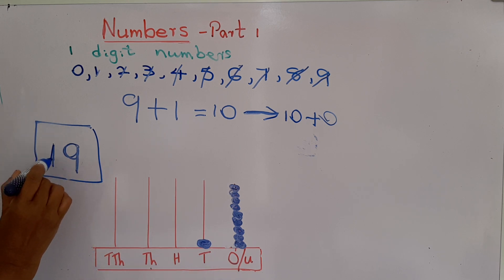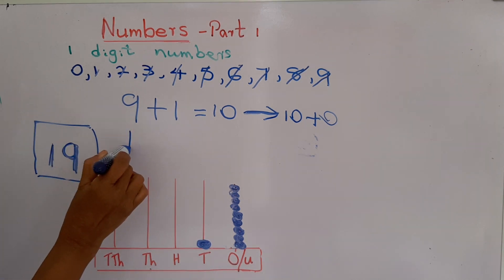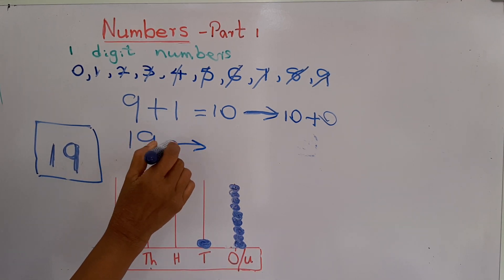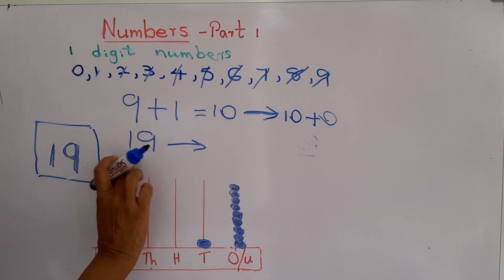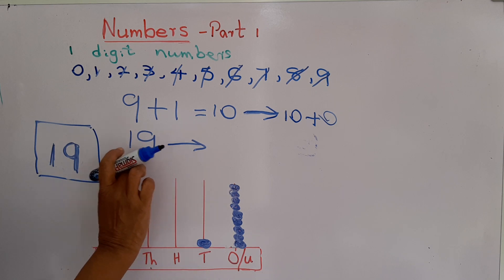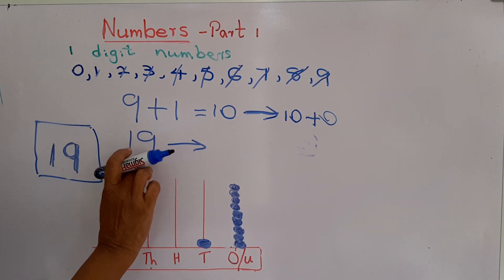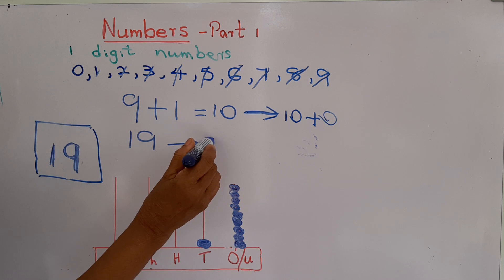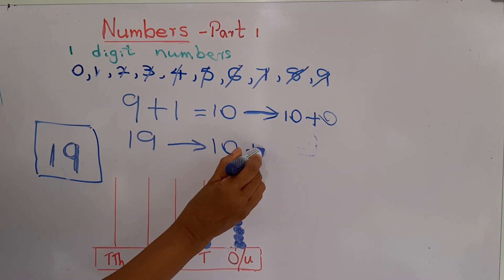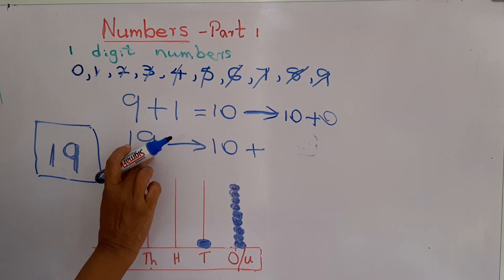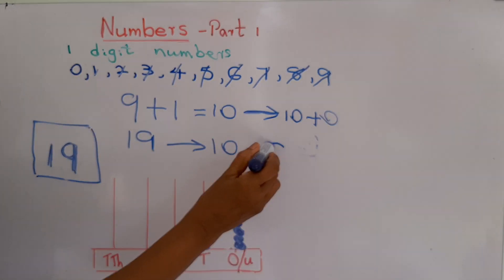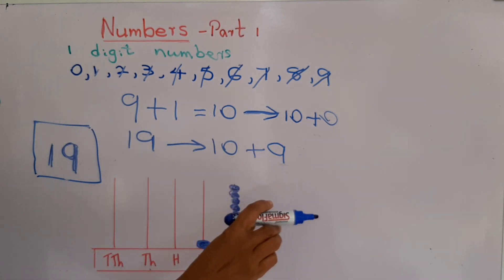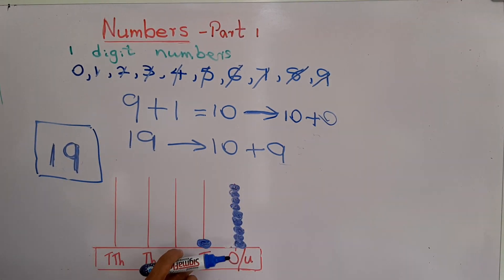Number 19. Shall we spread number 19? There are 2 places: the tens place and the ones place. Tens place — how many tens? 1 ten, which is 10. And how many ones? 9. So: 1 ten plus 9 ones equals 19.